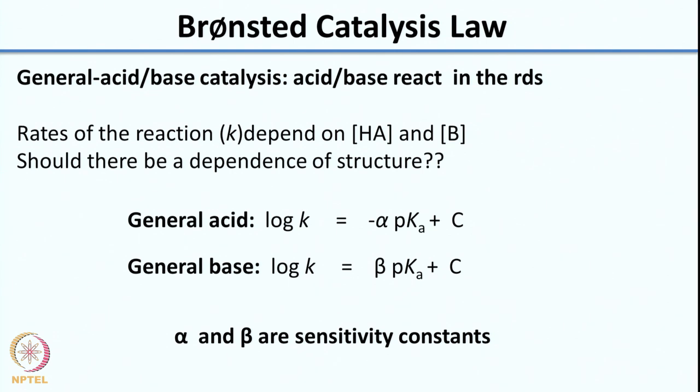Notice there is a negative sign in the case of general acid catalysis but not for general base catalysis. As the pKa of the acid increases, you have less acidity, so the K value will obviously decrease — you are looking at acid catalysis, so if acid strength decreases, catalysis decreases. Because of this inverse relationship, a negative sign is placed before α. That is not the case for β because there you are looking at pKa of the conjugate acid.